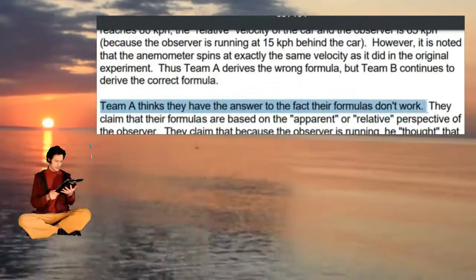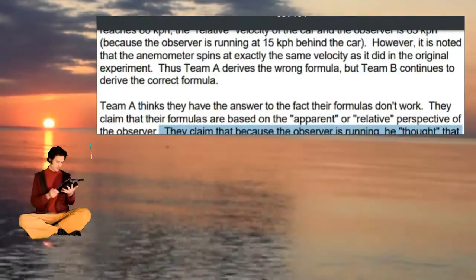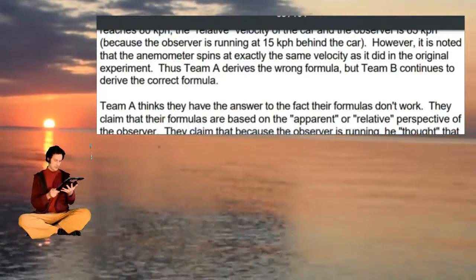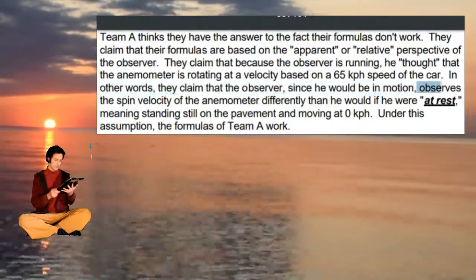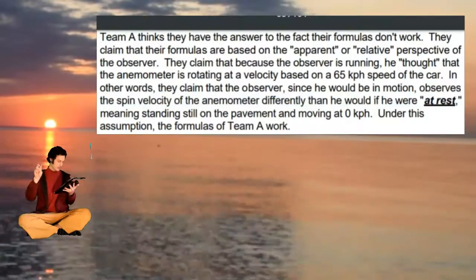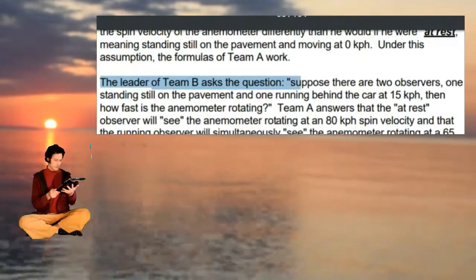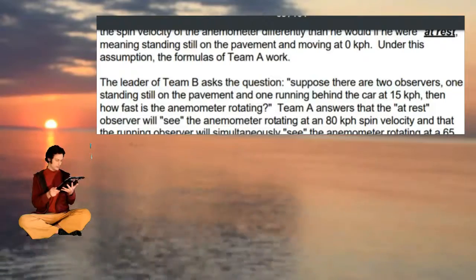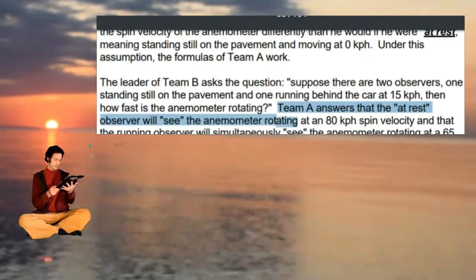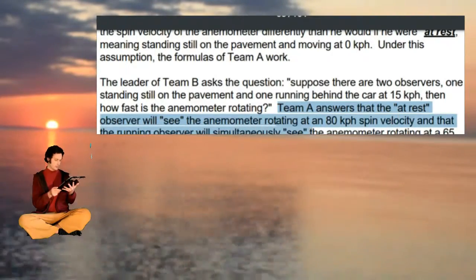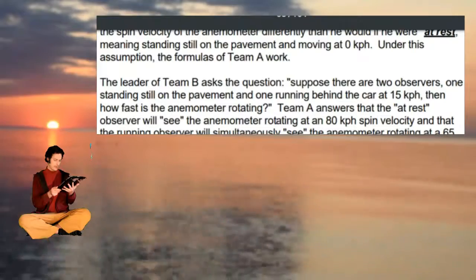Team A claims their formulas are based on the apparent or relative perspective of the observer. They claim that because the observer is running, he perceives the anemometer rotating at a velocity based on the 65 kph relative speed. In other words, they claim the running observer perceives the spin velocity of the anemometer differently than he would if standing still at 0 kph. Under this assumption, the formulas of Team A work. The leader of Team B then asks: if there are two observers — one stationary and one running at 15 kph — how fast is the anemometer rotating? Team A answers that the stationary observer sees it rotating at 80 kph velocity and the running observer simultaneously sees it rotating at 65 kph velocity. Thus Team A thinks they have proven that air doesn't exist.